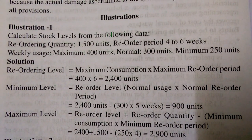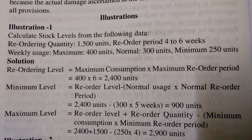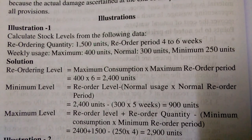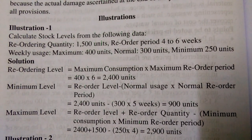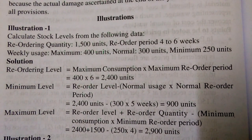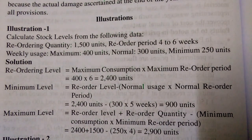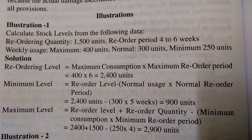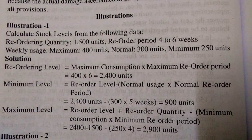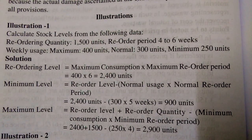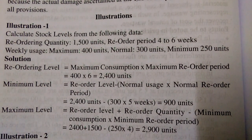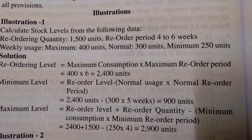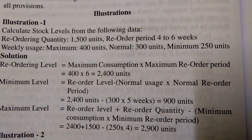Hi viewers. Stock levels purpose — we are giving an example. This is a compulsory question from the JIO exam, one mark point of view. Calculate stock levels from the following data: reordering quantity 1500 units, reorder period 4 to 6 weeks.